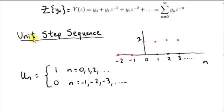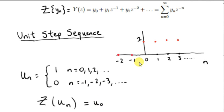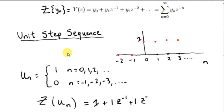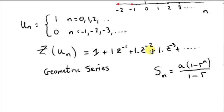Now let's consider the Z-transform of the unit step sequence. This sequence has value 1 for all n ≥ 0, and value 0 for negative n — but we're summing from 0 to infinity so negative n doesn't matter. u0=1, u1=1 multiplied by z^(-1), u2=1 multiplied by z^(-2), u3=1, and so on.